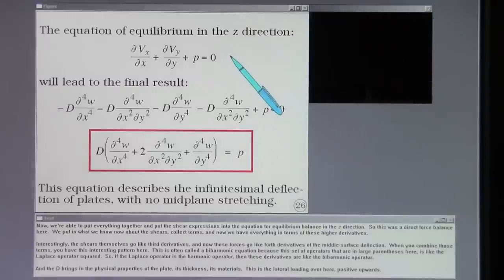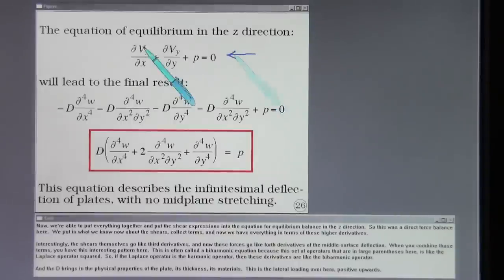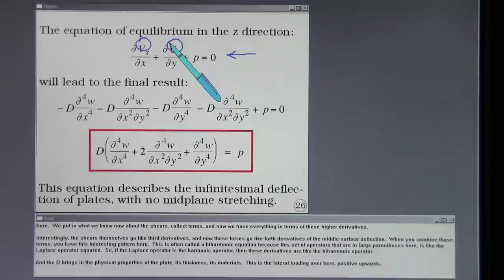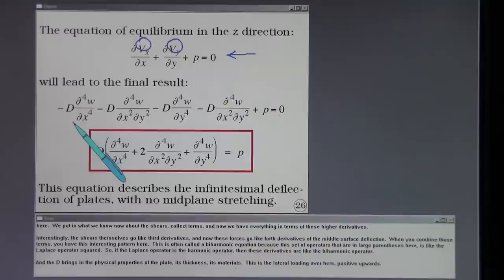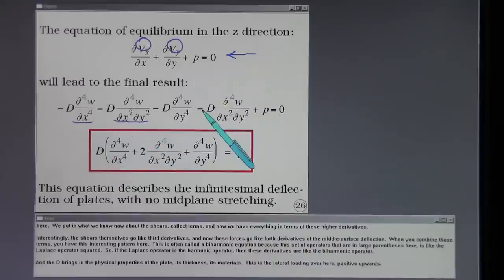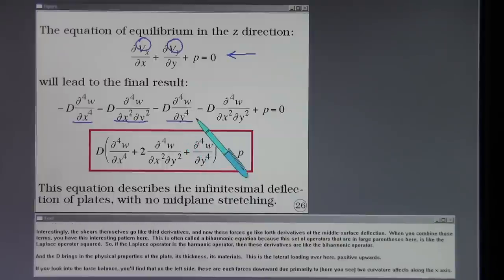Now we're able to put everything together and put the shear expressions into the equation for equilibrium balance in the z direction. So this was a direct force balance here. We put in what we know now about the shears, collect terms, and now we have everything in terms of these higher derivatives. Interestingly, the shears themselves go like third derivatives and now these forces go like fourth derivatives of the middle surface deflection. When you combine those terms, you have this interesting pattern here.